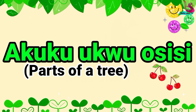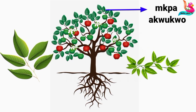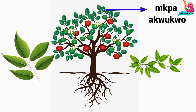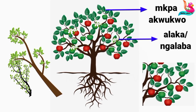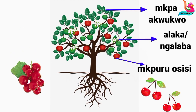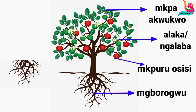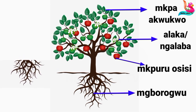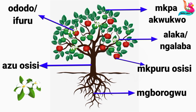A Koko Ukwo Sisi — Parts of a Tree. Alaka Mobo Ngalaba — branch. Mboro O Sisi. Mborogo. Azu O Sisi. Azu O Sisi. O Dodo Mobo Ifuru.